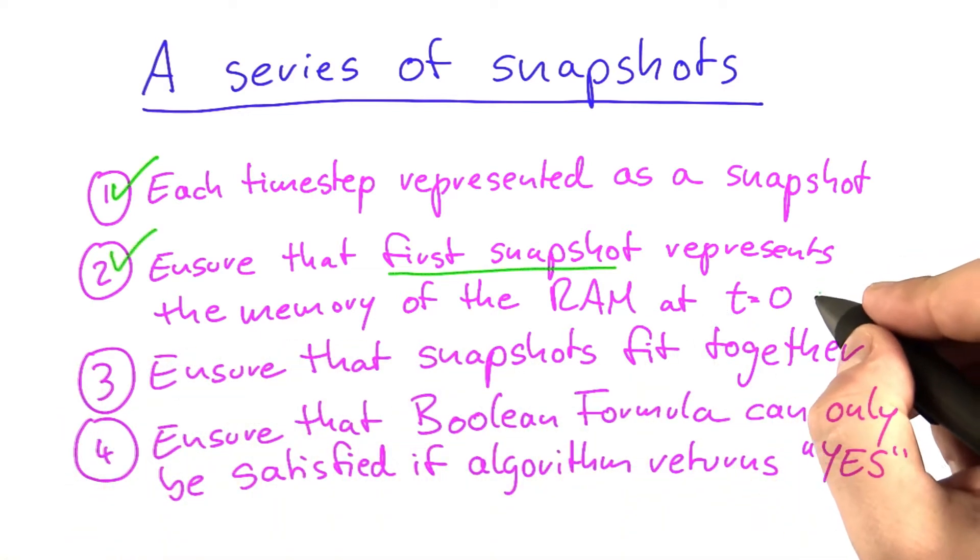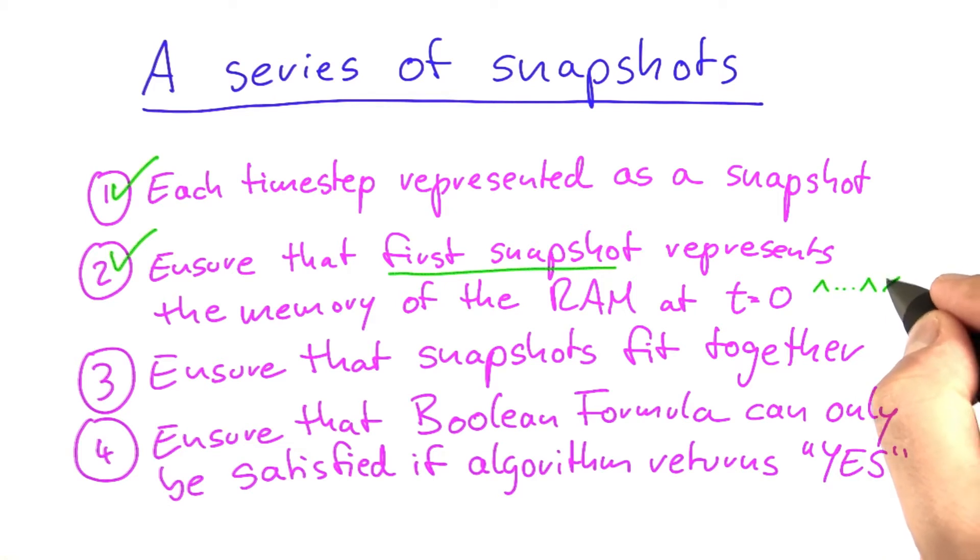So for example, if in a Boolean formula you want a variable x1 to be set to true, you would write it like this. You would have certain statements in the Boolean formula and then you would just put the variable x1 here and then continue the formula, and then you know it has to be set to true.